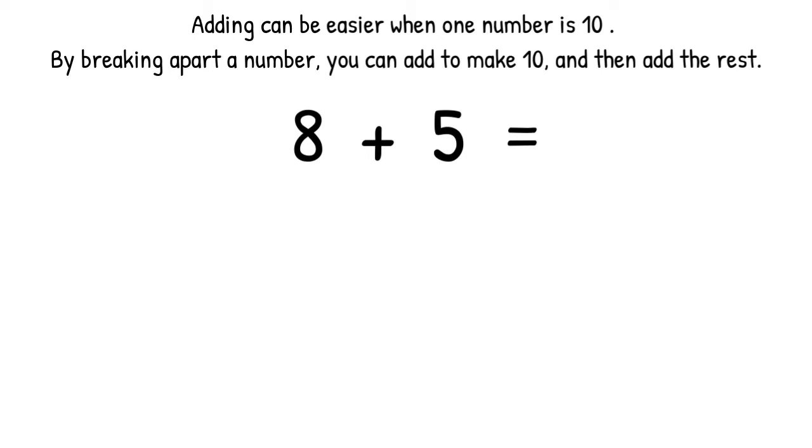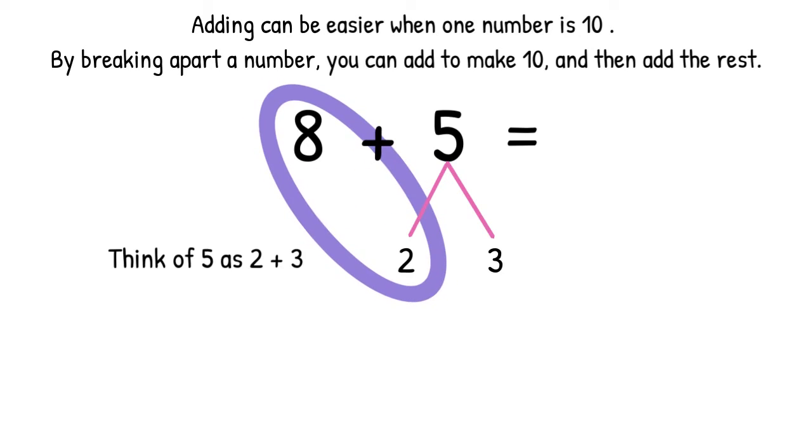Let's look at 8 plus 5. Think of 5 as 2 plus 3. Why did I break apart the 5 into 2 and 3? I chose 2 plus 3 because I know my Make a Ten facts. And if I want to make a 10 with the 8, I know I need a 2. Then the leftover part of the 5 is 3.